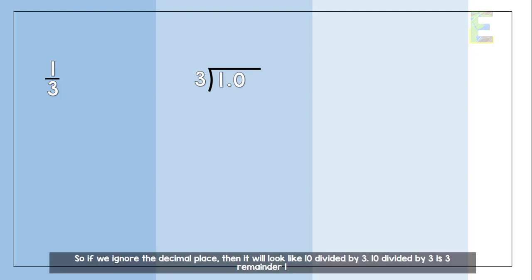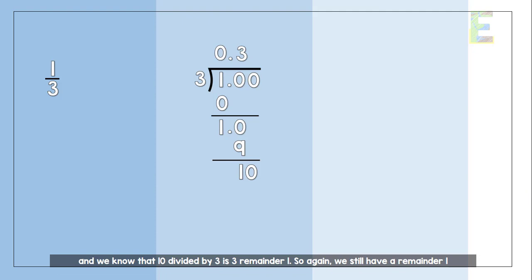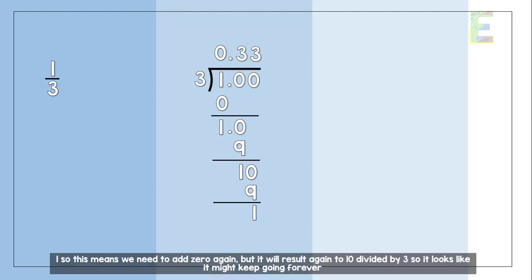So, if we ignore the decimal place, then it will look like 10 divided by 3. 10 divided by 3 is 3 remainder 1. So, again, we still have a remainder 1. So, this means we need to add 0 again. But it will result again to 10 divided by 3.